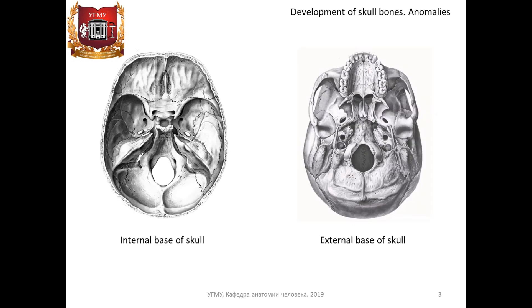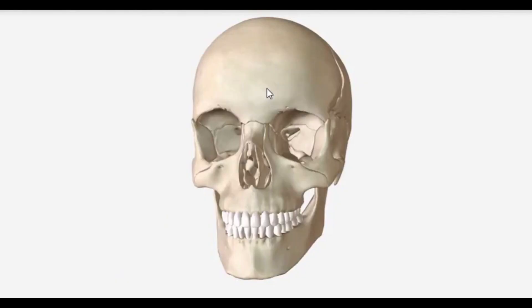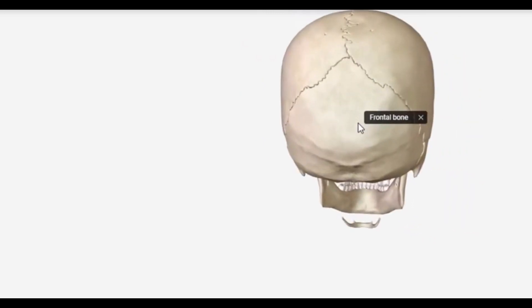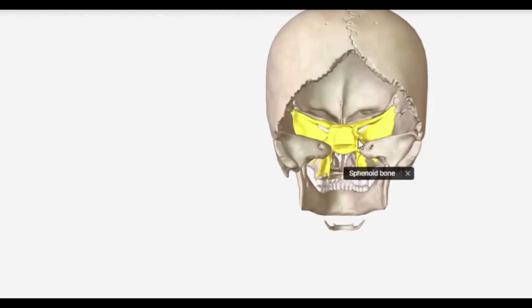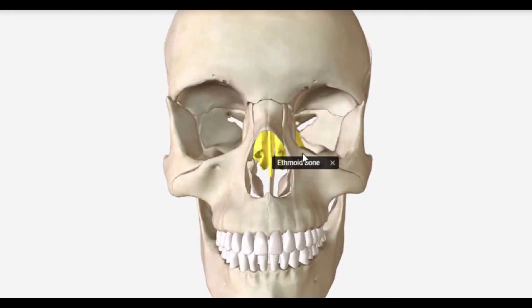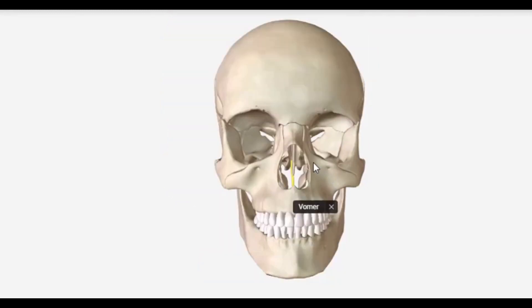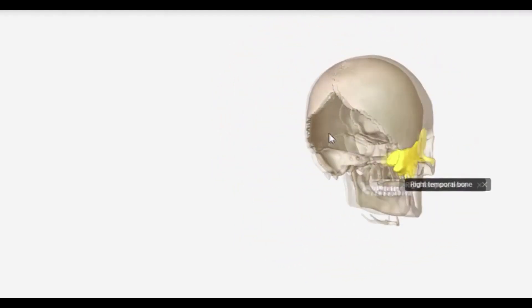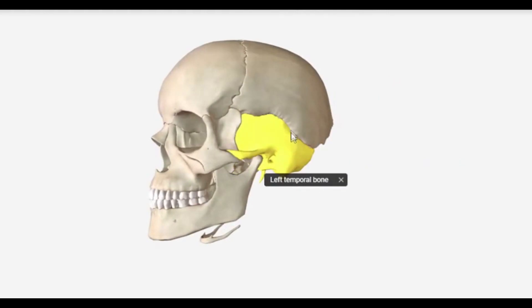The base of skull is the basis cranii. We distinguish the external and internal base of skull – basis cranii externa et interna. Cranial brain bones can be unpaired and paired. Unpaired bones are: frontal bone (os frontale), occipital bone (os occipitale), sphenoid bone, and ethmoid bone (os ethmoidale). Paired bones are: temporal bone (os temporale) and parietal bone (os parietale).